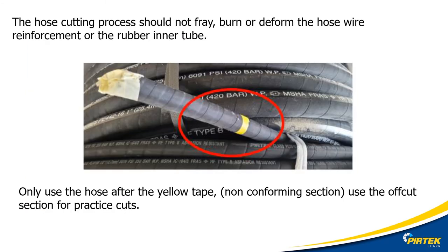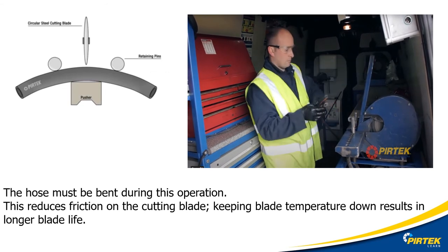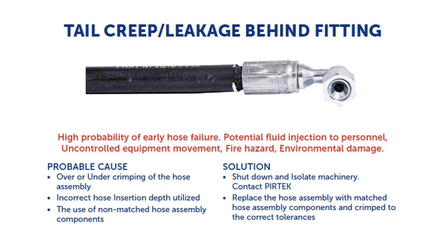Step three: cutting the hose. Make sure you reference the risk assessment and work instruction for your particular hose cutting machine. It is critical that you keep your hose squareness plus or minus 5 degrees. Only use the hose after the yellow tape. It's recommended that you save any cutoffs for practicing using the cutoff machine and for practice crimping. The hose cutting process should not fray, burn, or deform the hose wire reinforcement or the rubber inner tube. You can cut the hose with a hacksaw — use a 32 TPI hacksaw blade and be wary not to crush the hose while clamping it. Excessive cropping angle could cause the hose to creep or leak behind the fitting.